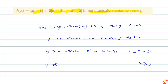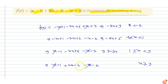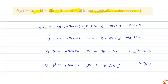When x is greater than or equal to 3, all terms open positively. So f(x) = (x - 1) + (2x - 6) - (x - 2). The x terms cancel out and we get 2x minus 9.